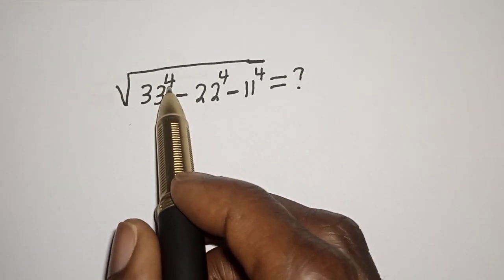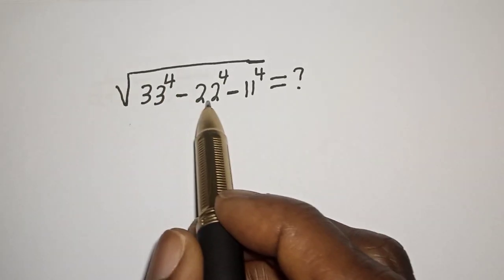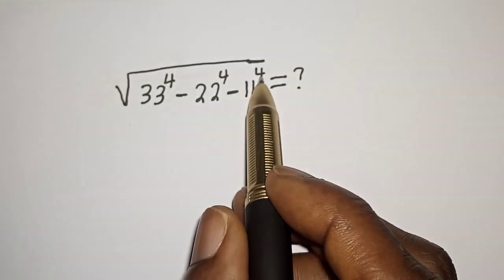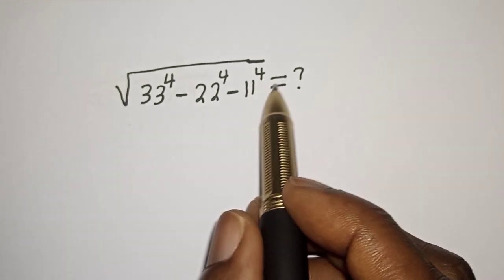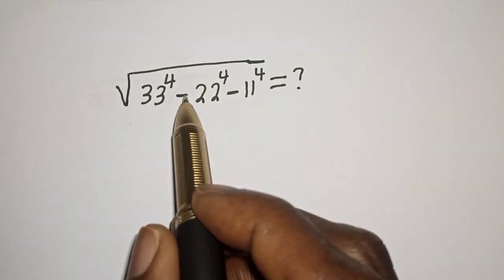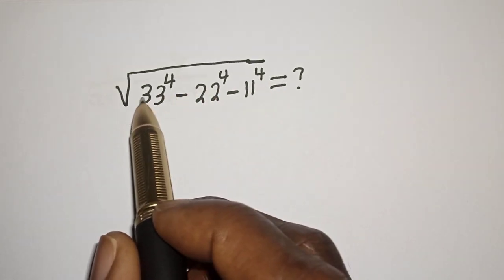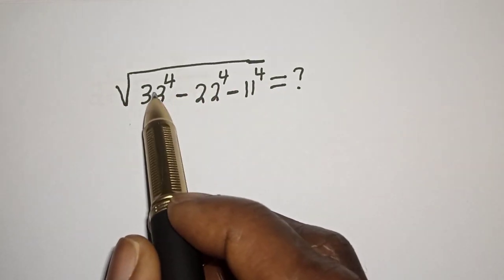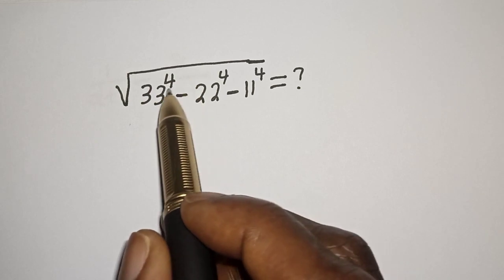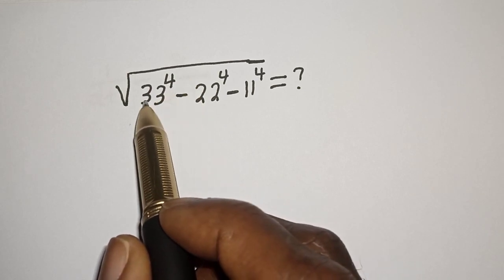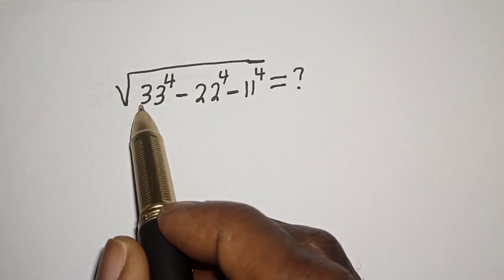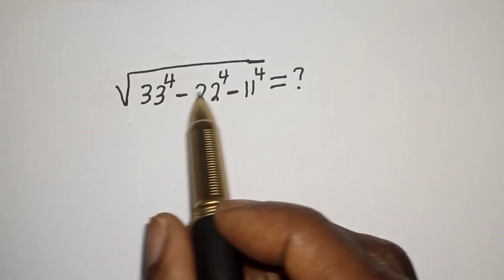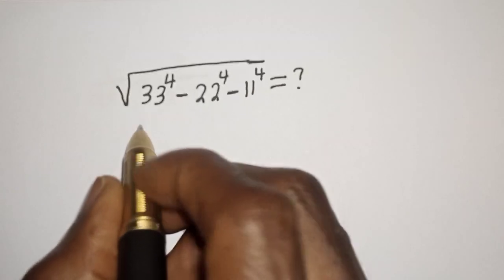Square root of 33 raised to power 4 minus 22 raised to power 4 minus 11 raised to power 4 is equal to what. Hi everyone, welcome to my class. In this class we quickly want to evaluate this nice smart problem. Before we proceed, please don't forget to like, share, comment and subscribe.